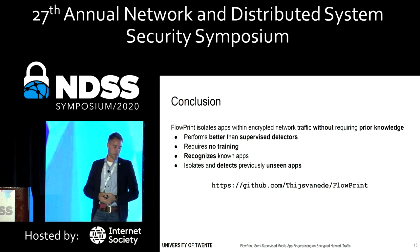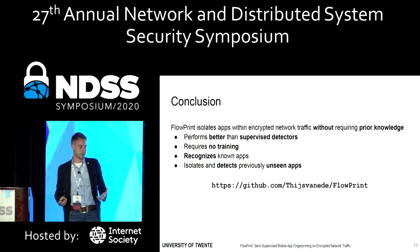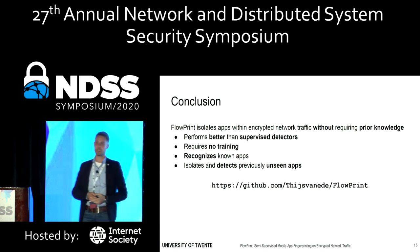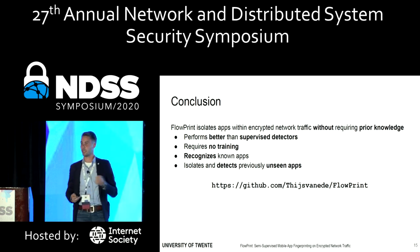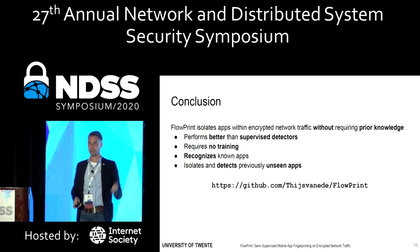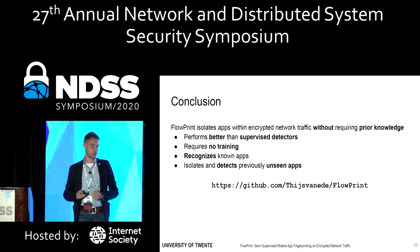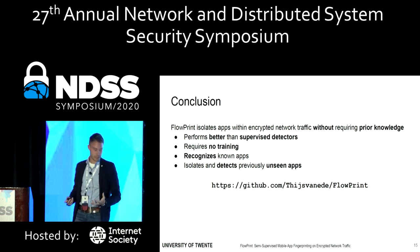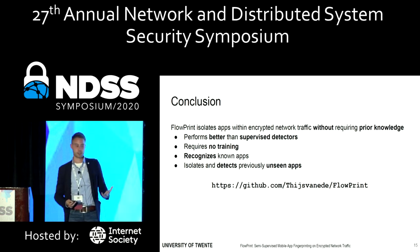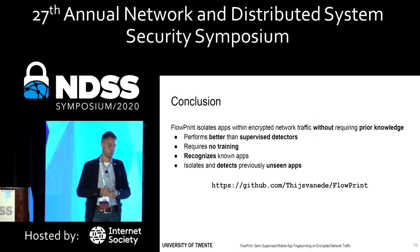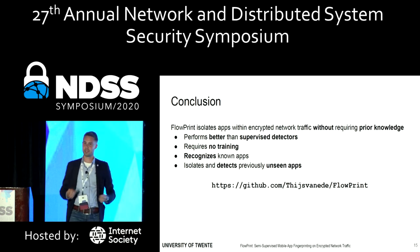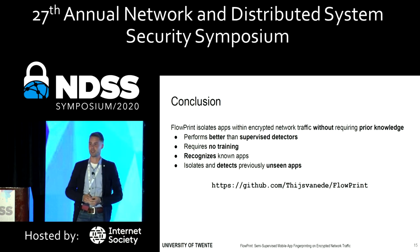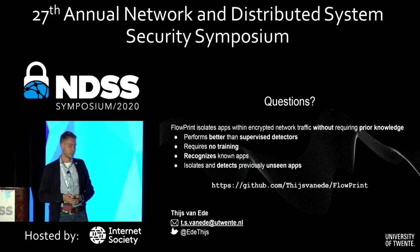In short, we created FlowPrint: a system that isolates apps within encrypted network traffic, and we don't require prior knowledge on the applications we want to detect. We've shown that it works even better than some supervised detectors, it requires no training, it can recognize known apps, and it can isolate previously unseen apps. We've also made our code available, so if you want to have a play around with it yourself, please feel free to have a look.